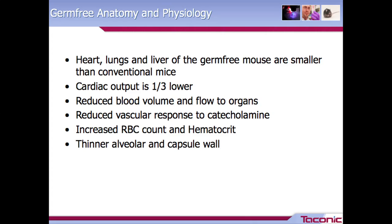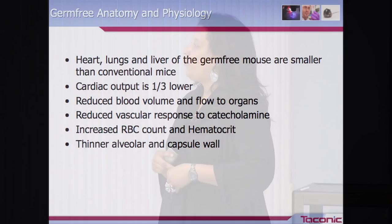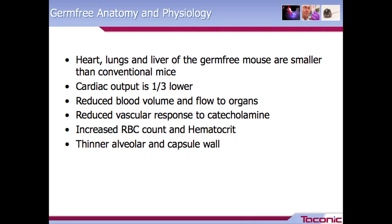From a cardiovascular standpoint, for investigators wanting to do studies related to cardiovascular or pulmonary research, important things to note: the heart, lungs, and liver of germ-free mice are much smaller than those of conventional mice. Their cardiac output is typically one-third less than that of a conventional mouse. They have reduced blood volume and flow to organs, reduced vascular response to catecholamines, increased red blood cell counts and hematocrit. The alveolar cells and capsular cells within the lung are also thinner in comparison to the conventional animal.